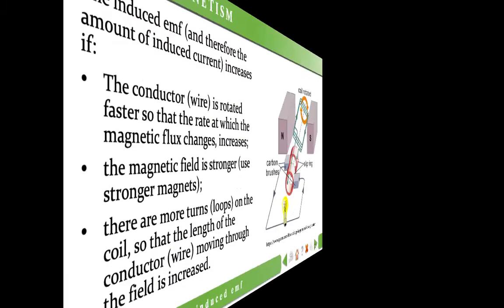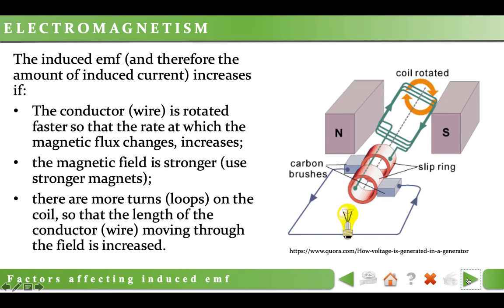There are three ways to increase the induced EMF in a generator. One is to increase the speed of rotation — the faster the coil rotates, the faster the magnetic flux changes. Recalling Faraday's law: induced EMF is directly proportional to the rate of change of magnetic flux. The second way is to use stronger magnets, which will also cause a greater change in magnetic flux. Finally, we can increase the number of turns in the coil, since induced EMF depends on the number of turns too.